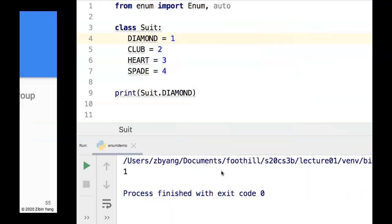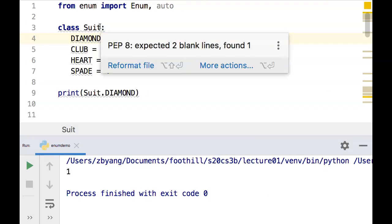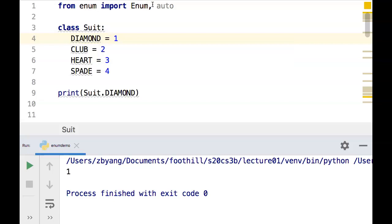In order to define the suit as an enum, the first thing we have to do is import from the enum module the Enum class. Next, we still define suit as a class, but in this case we're going to make it inherit from the Enum class that we just imported.